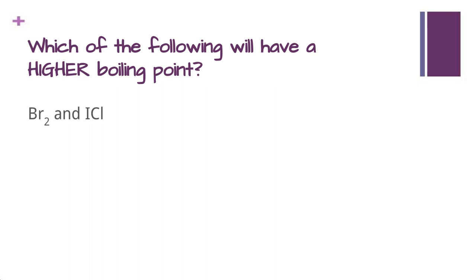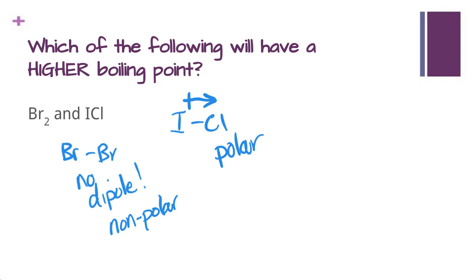So let's take a look at this example. Which of the following will have a higher boiling point? Well, if we take Br2 and look at its structure, there's no dipole here because they're both the same element. Whereas if we looked at ICl, because they're two different elements, we do have a permanent dipole here, and it's pointing towards the chlorine. So that means that Br2 is non-polar, because there's no dipole, whereas ICl is a polar molecule. So Br2 has London forces only, whereas ICl has both London and dipole-dipole. I'm just going to write DD for short, so ICl would have the higher boiling point.